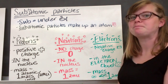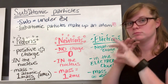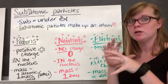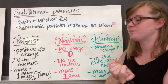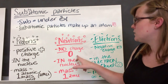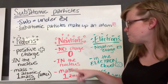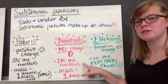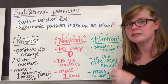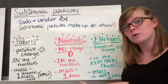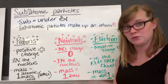Neutrons have no charge — zero charge. Neutral neutrons have no charge. These guys are also found inside the nucleus, and they also have a mass of one atomic mass unit.